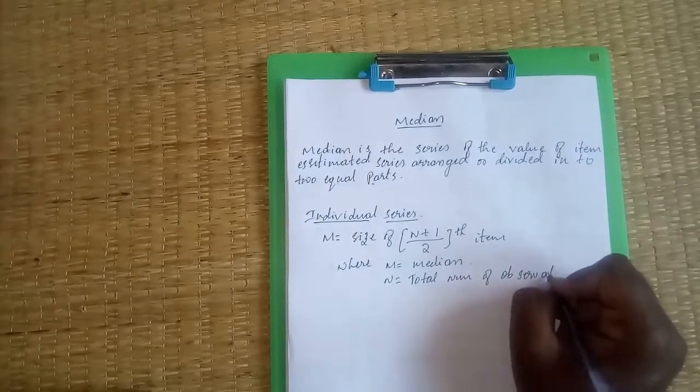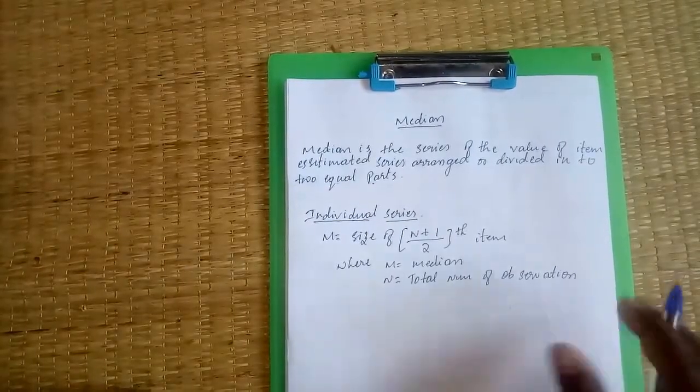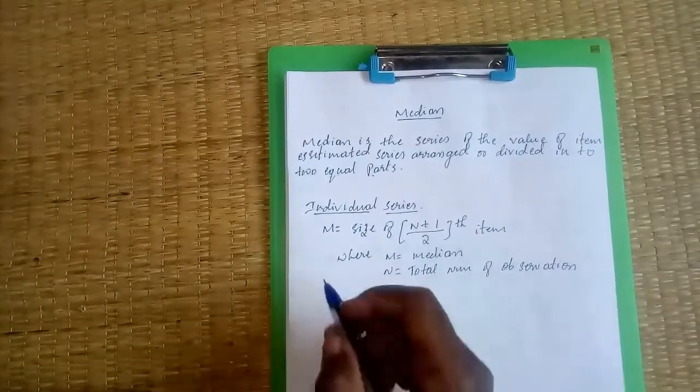n equals total number of observations. So this is the formula. Next, for discrete series.